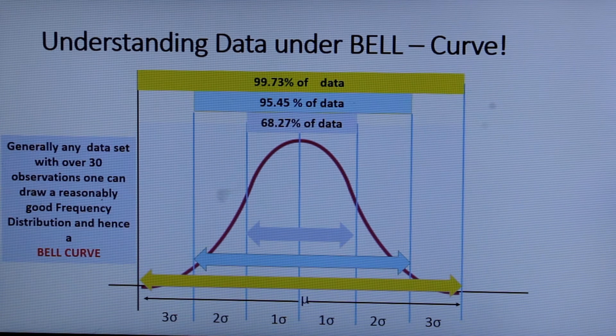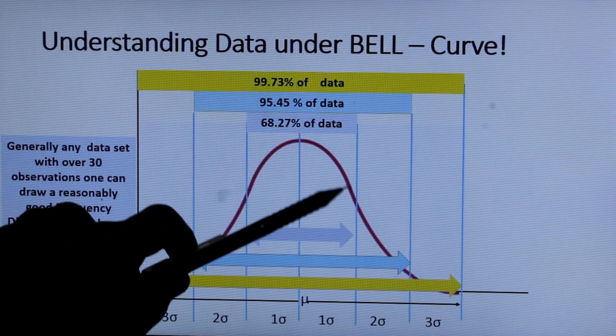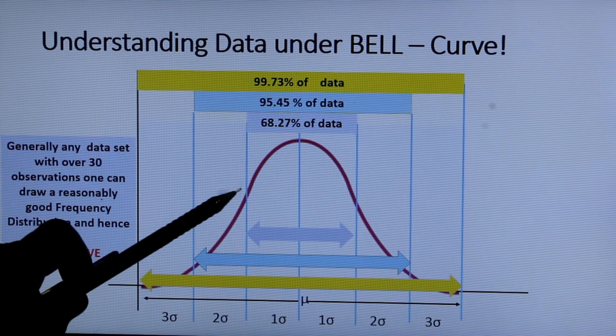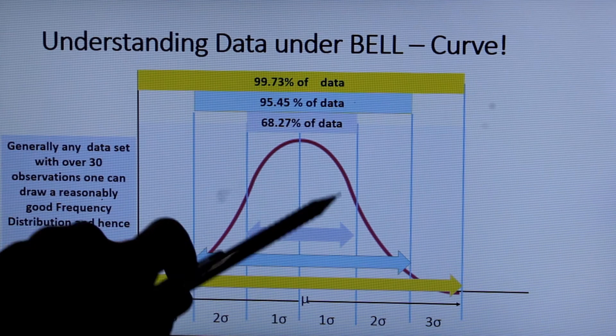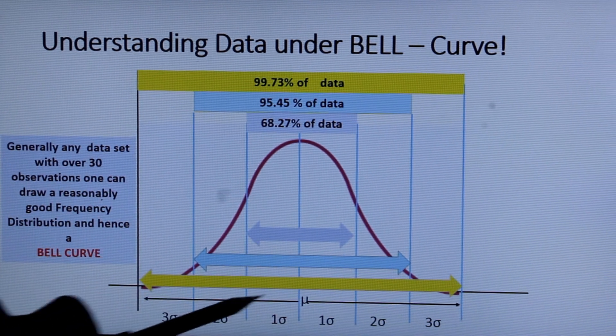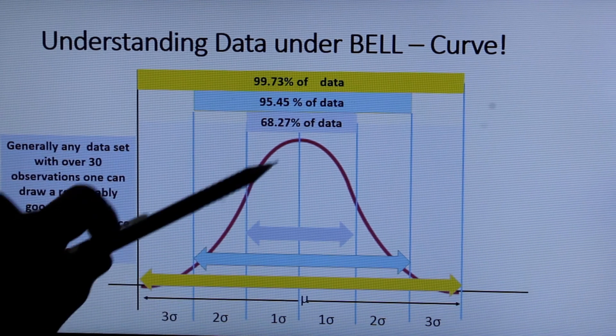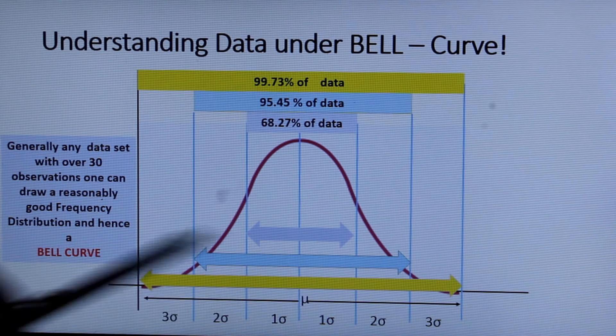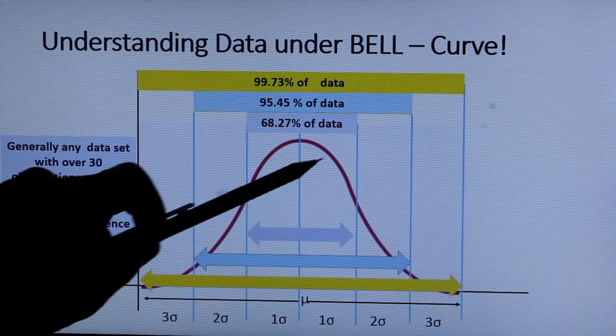Now with one standard deviation the data points falling out of the bell curve is about 68.27%, that means all the data points with respective frequency diagram will be in this zone. With two sigma limits on either side of the mean you get 95.45% of the data. So this area plus this additional area and with three sigma limits you will get almost all the data points falling under the bell curve.